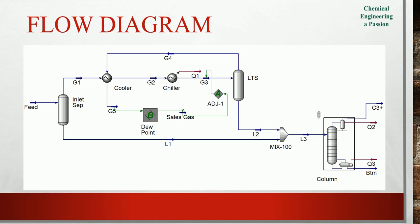Here is the flow sheet of the process. We have an inlet separator, then a cooler, chiller, low temperature separator, and a column at the end which is a depropanizer.